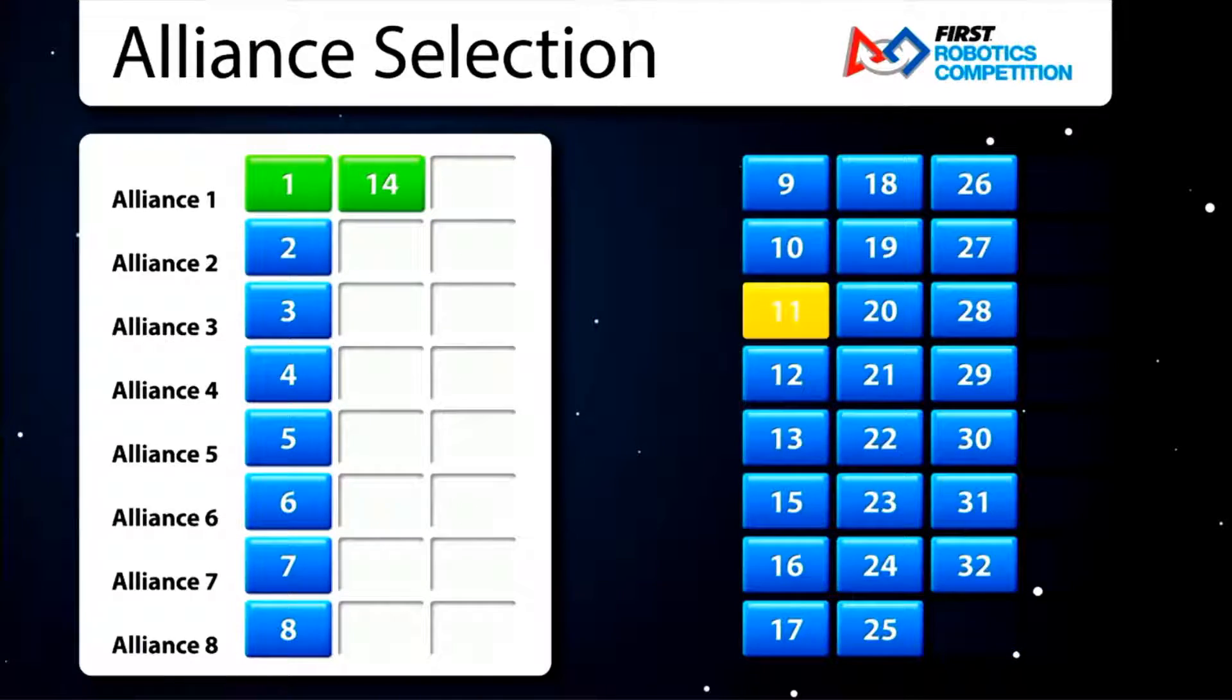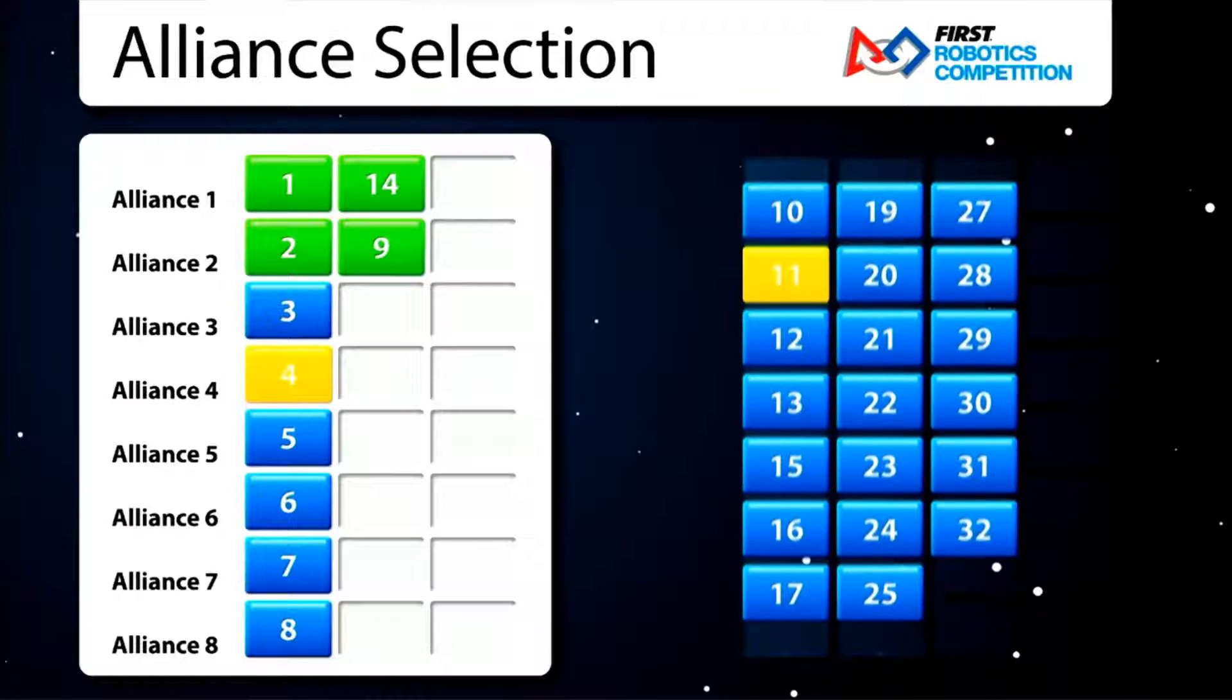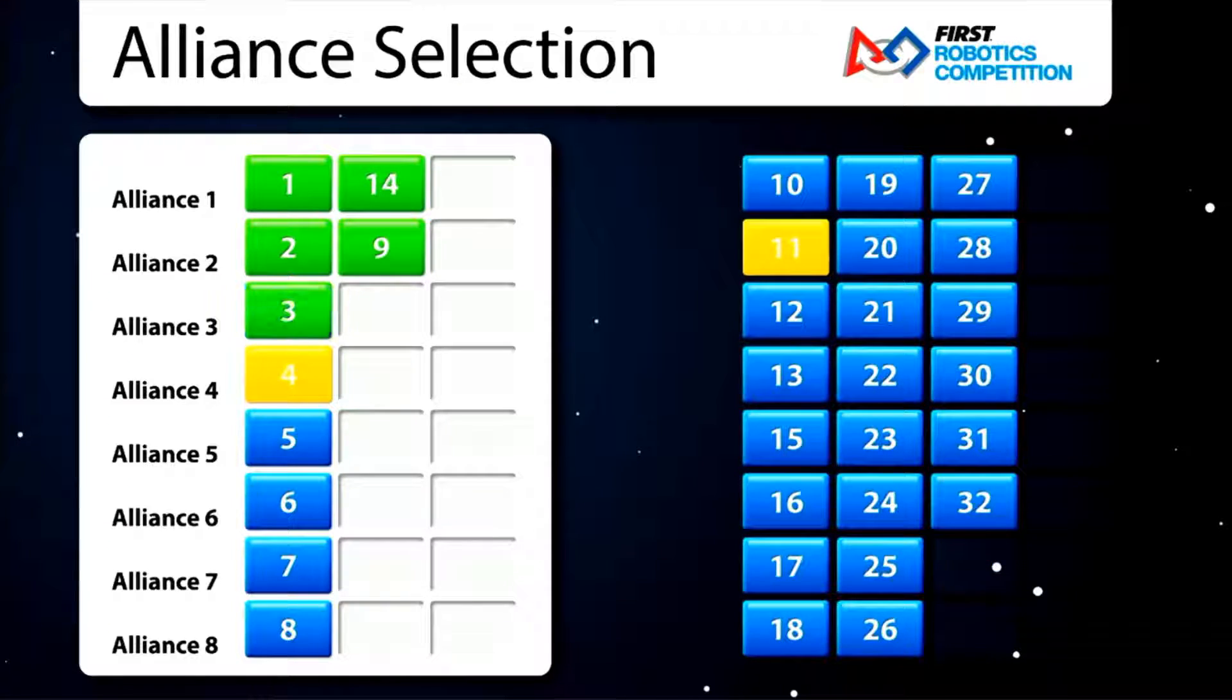Suppose Alliance 2 selects Alliance 4, but Alliance 4 declines and Alliance 2 selects another team which accepts. It's now Alliance 3's turn, but the same rule applies. Alliance 4 is not available, so Alliance 3 has to select another team from the available pool.